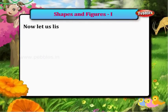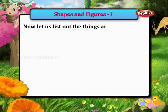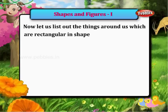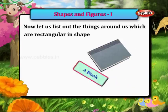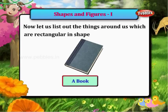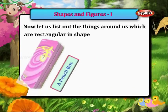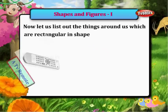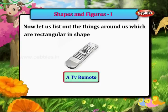Now let us list out the things around us which are rectangular in shape: a book, a pencil box, a TV remote, a laptop.